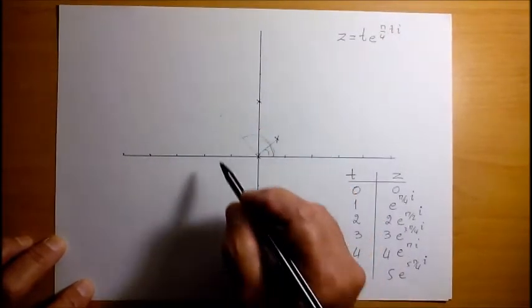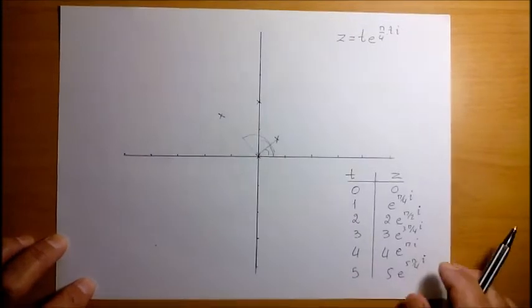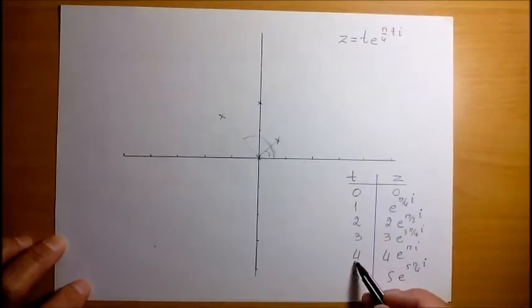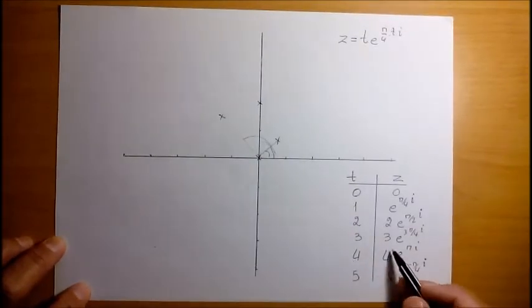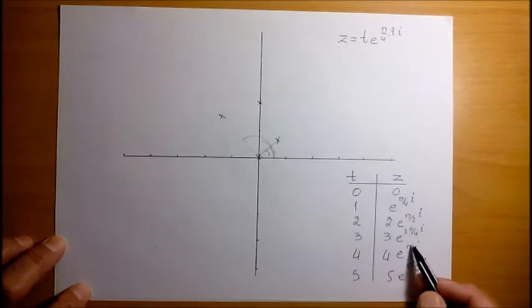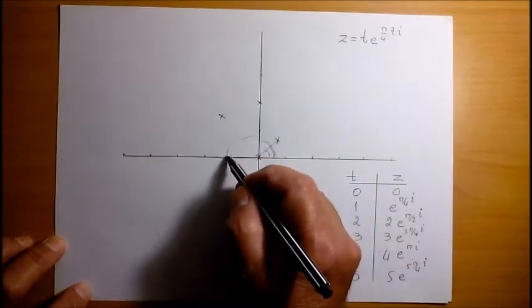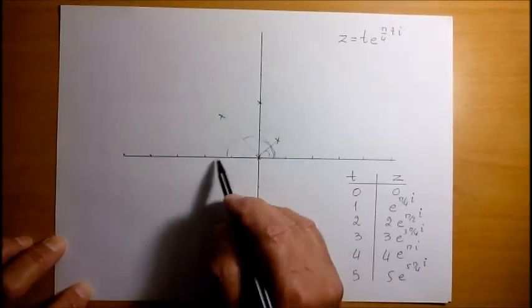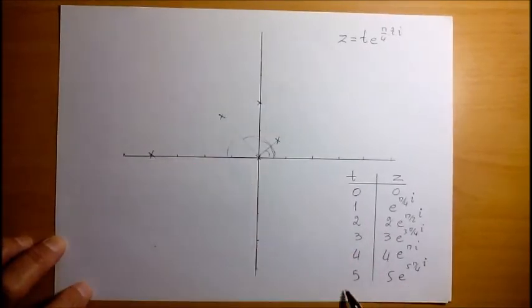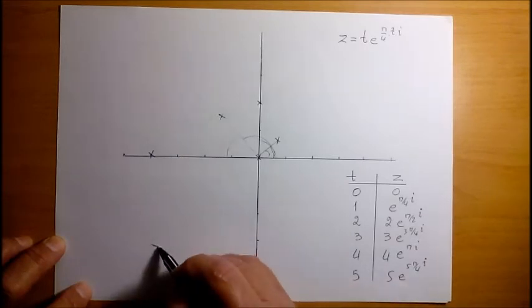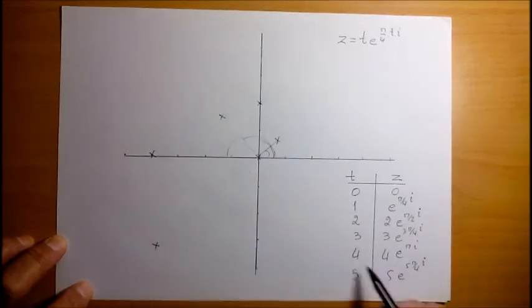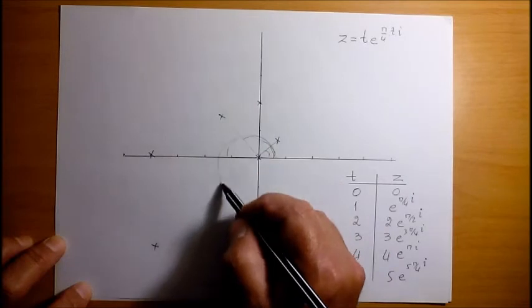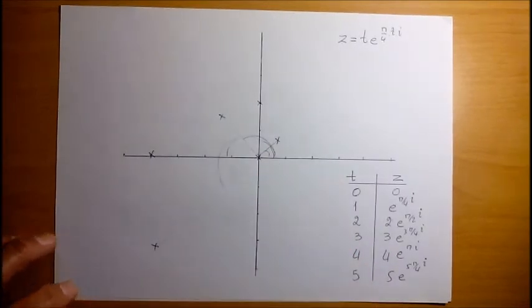For t equals 4, we have modulus 4 and angle pi, which is this. So our complex number is somewhere here. And for t equals 5, it is here, as its angle is 5 times pi by 4.